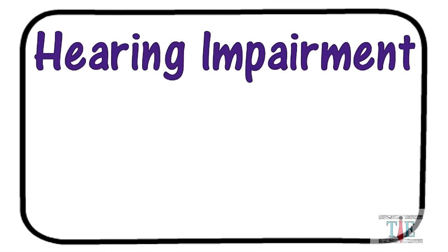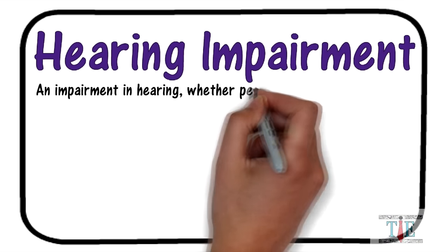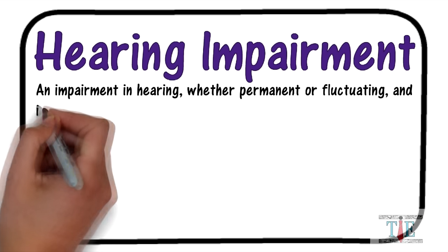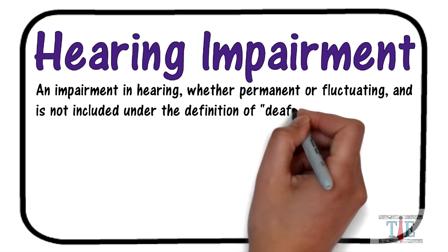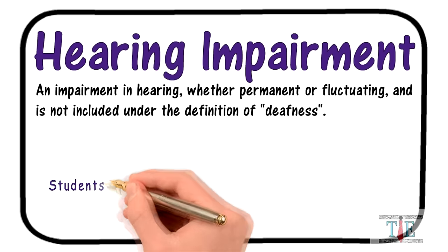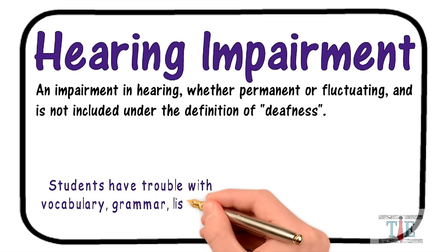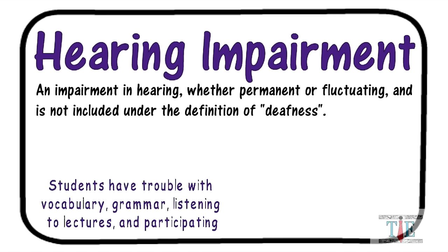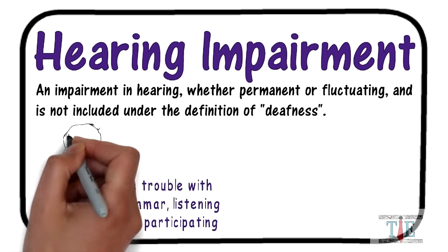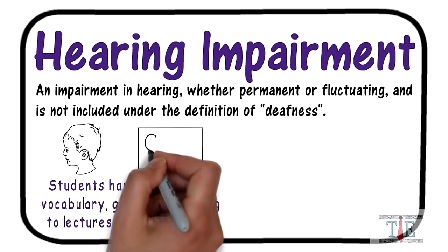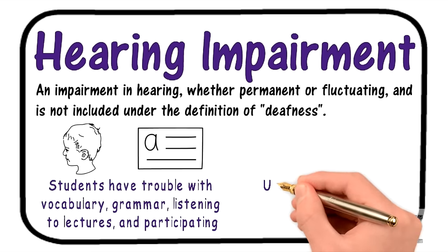Second to last: hearing impairment. This is an impairment in hearing, whether permanent or fluctuating, and is not included under the definition of deafness. Students have trouble with vocabulary, grammar, listening to lectures, and participating in classroom discussions. It may appear these kids aren't paying attention, but in fact they haven't heard what was said. Reading and language arts are generally very difficult for them.